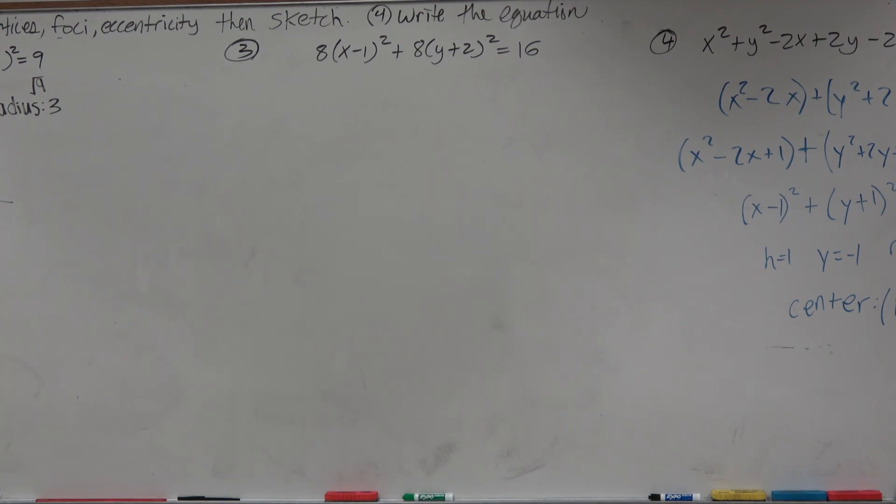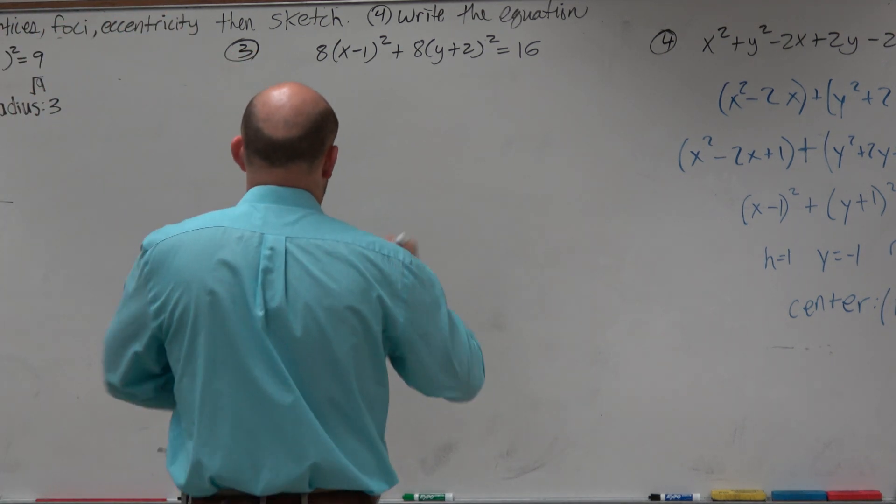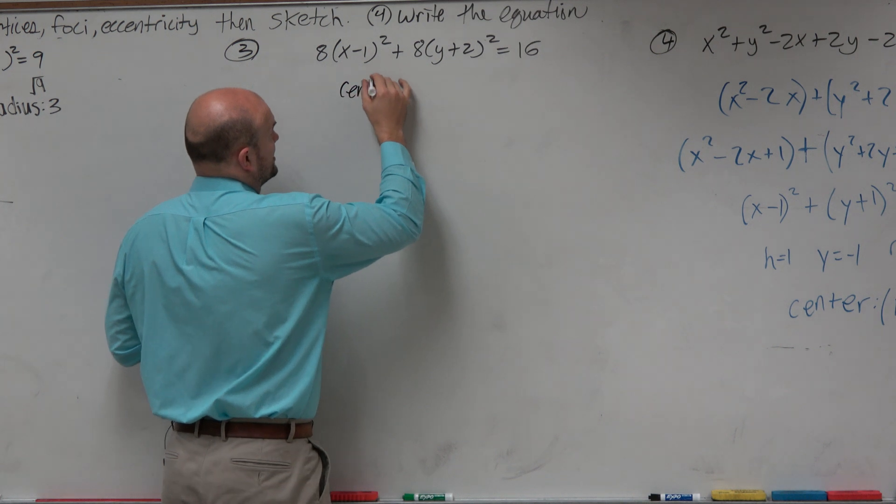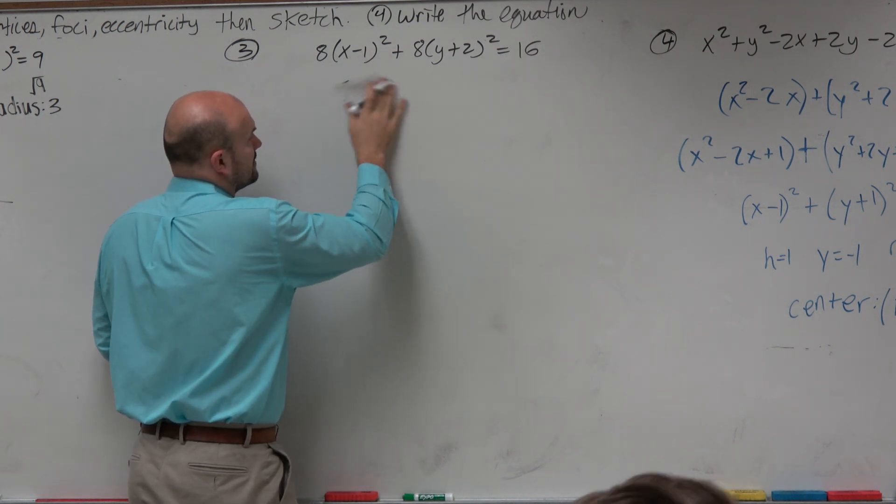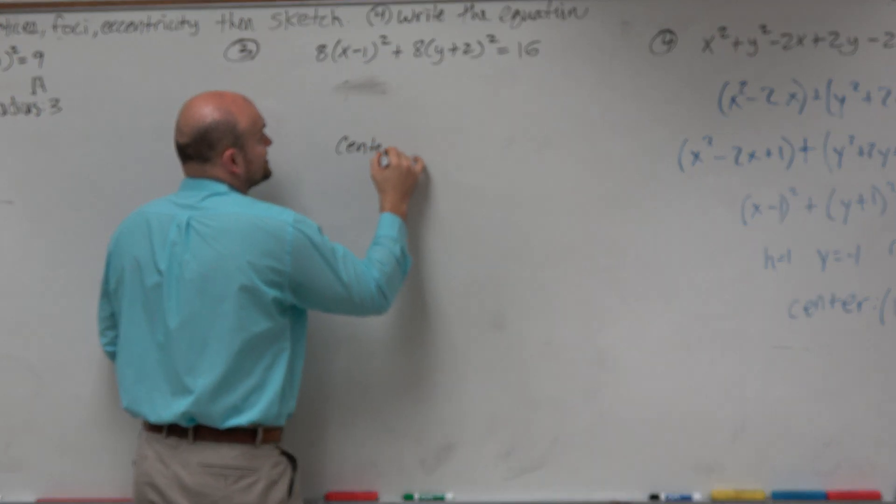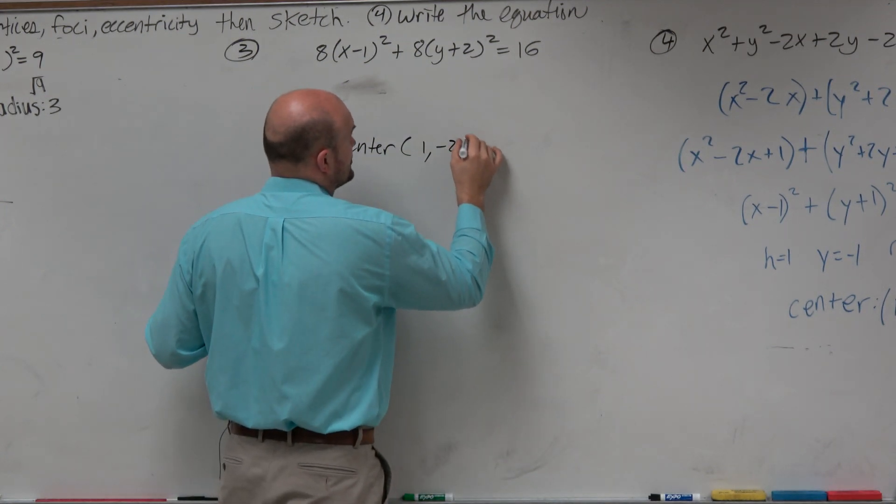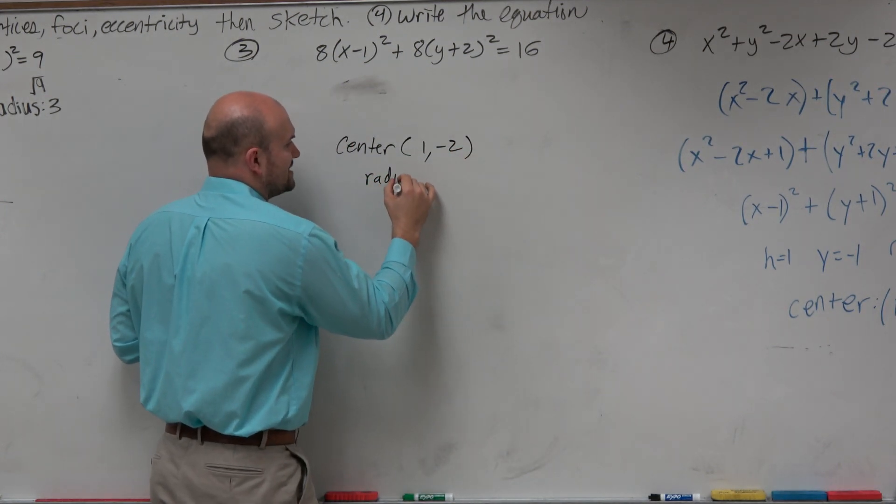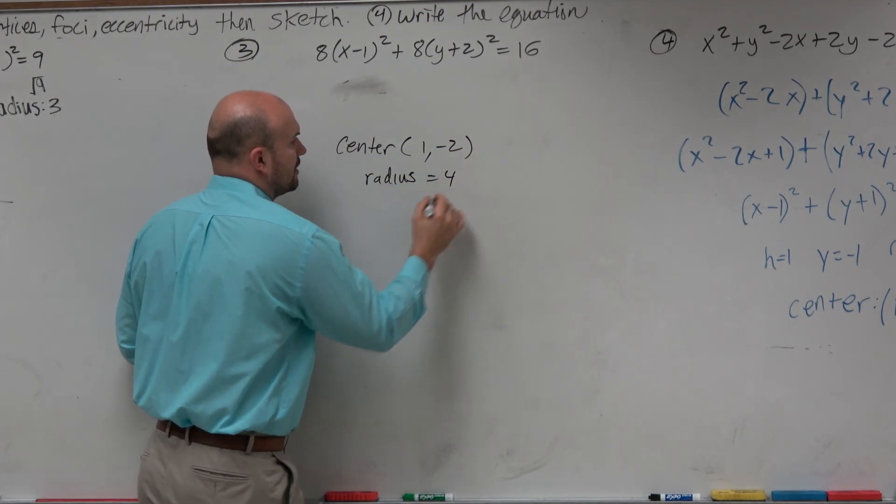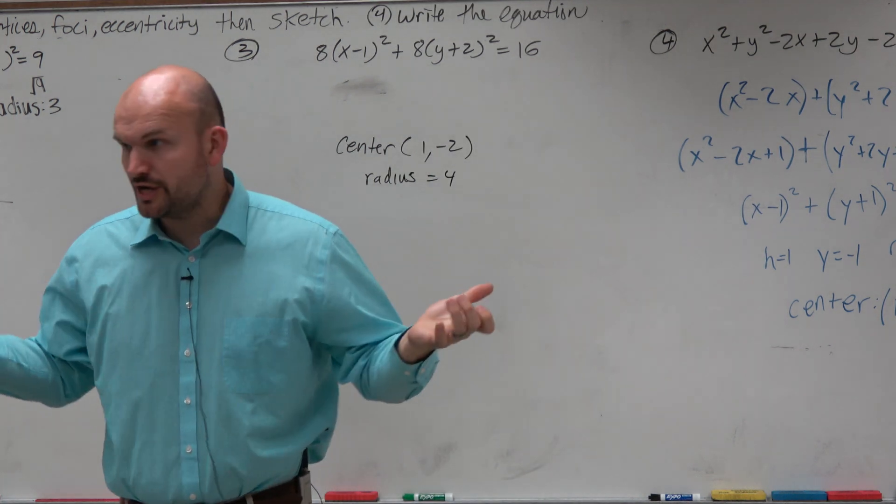So in this example, a lot of students will see 16 and say, oh, I can take the square root of that. So they say the center is going to be (1, -2), and then they say the radius is equal to 4, because you can take the square root of 16 and you're good to go.